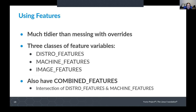As well as overrides, we have features. In a lot of cases, using features can be tidier than messing around with overrides depending on what you're trying to achieve. We have DISTRO_FEATURES, typically set in a distro.conf file; MACHINE_FEATURES, typically set in a machine conf file; and IMAGE_FEATURES. One variable that's really useful is COMBINED_FEATURES, which is essentially an intersection of things defined in both DISTRO_FEATURES and MACHINE_FEATURES. This is useful for things like Bluetooth, where your machine may support Bluetooth but you also want to say whether your distro does or not. Use these features in your bbappends — rather than unconditionally adding Bluetooth support, use your bbappend to check whether Bluetooth is in COMBINED_FEATURES before modifying what the recipe does, and that's going to make it much easier to combine your layer with other layers.